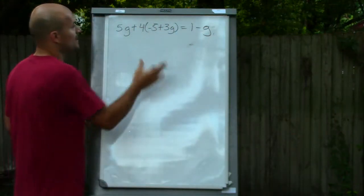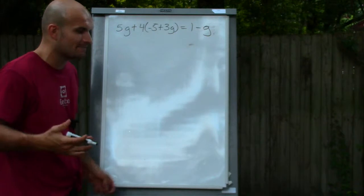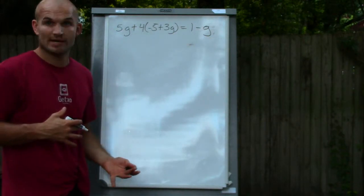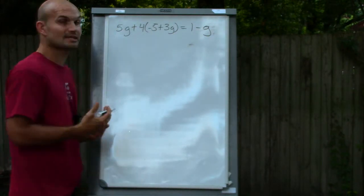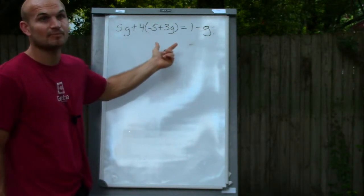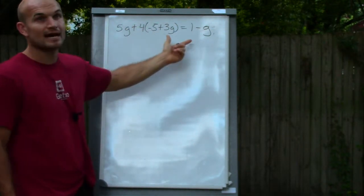So automatically I look on this left side and I think, alright, simplifying, I'm going to have to use my order of operations. The first thing is look at my parentheses. I can't do any operations inside the parentheses because those are not like terms.